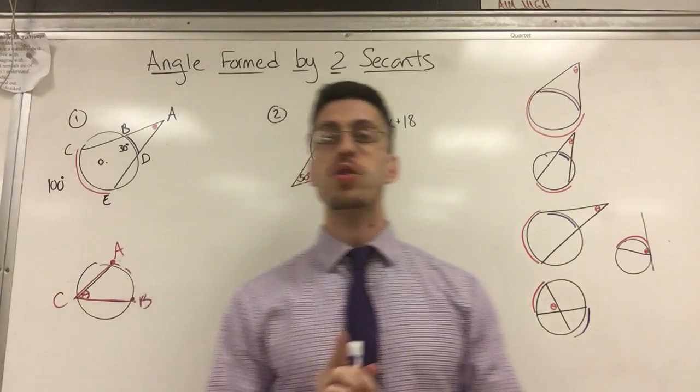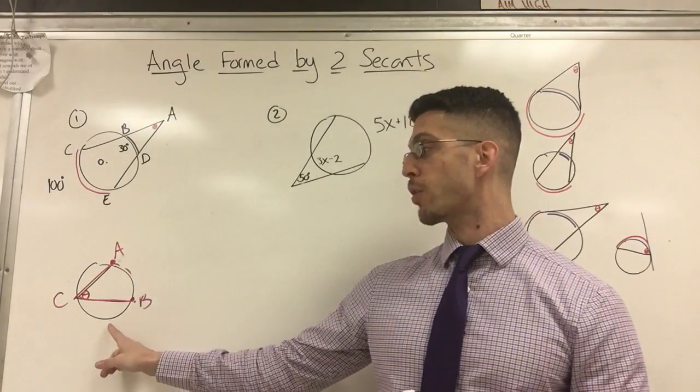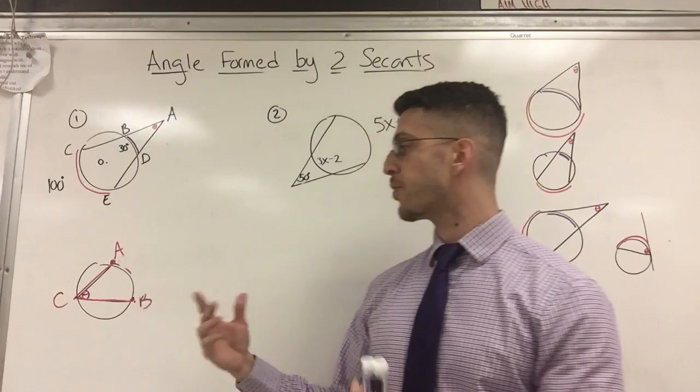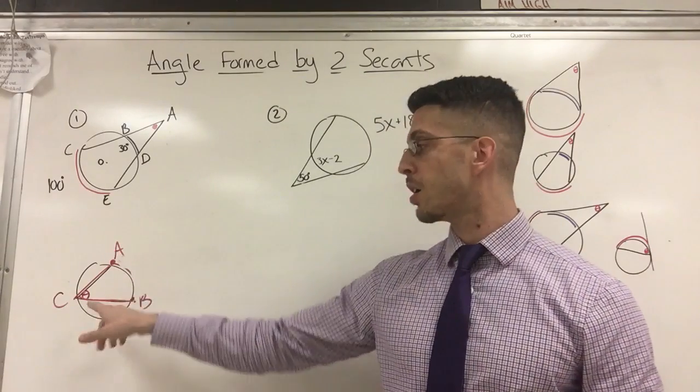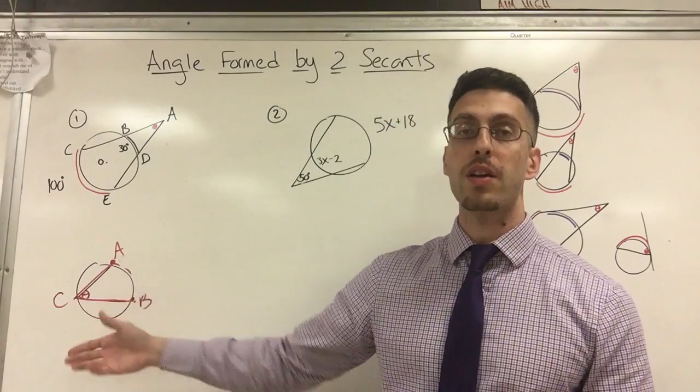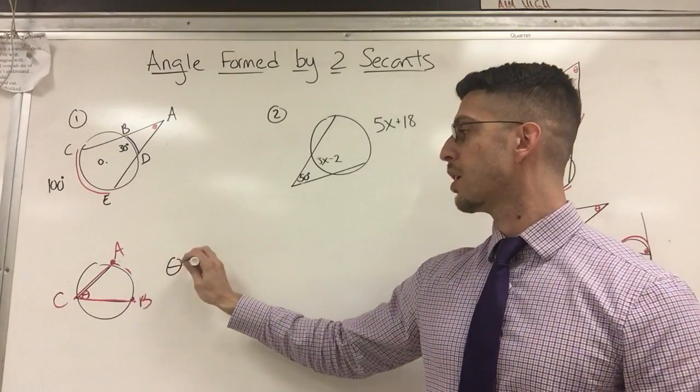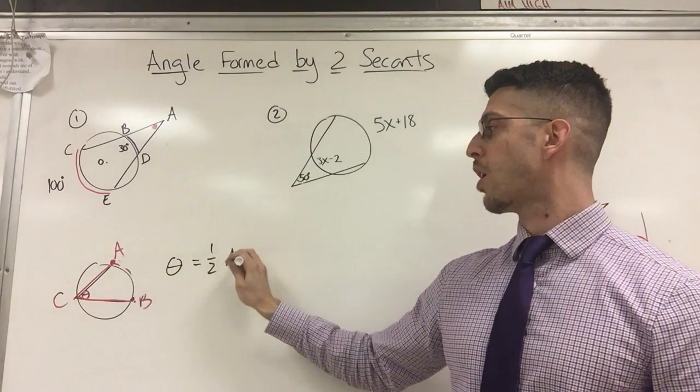But the theme all stems from this diagram that hopefully you learned a long time ago. When you have an inscribed angle, what is the formula for finding the measure of that angle? By the way, this little thing inside just means theta or the unknown angle. So my formula is theta equals one half arc AB.